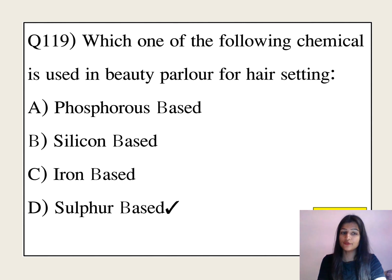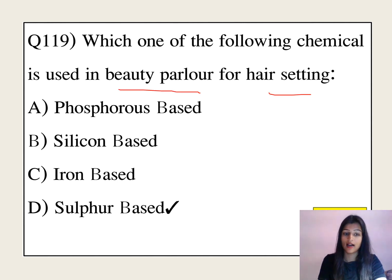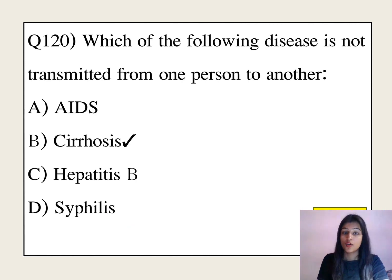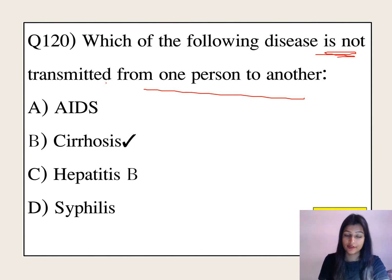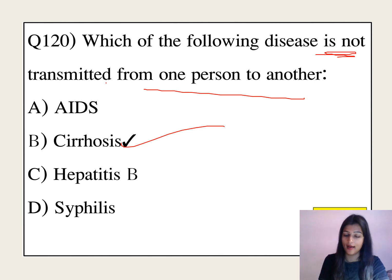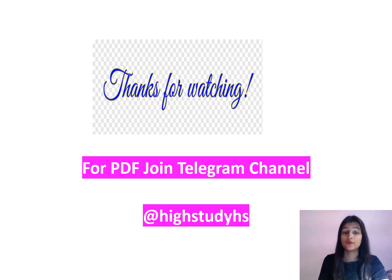Which chemical is used in beauty products for hair setting? The answer is sulfur-based compounds. Which disease is not transmitted from one person to another? With this we complete today's session. You can find the PDF on the High Study channel, and you can ask questions in the comment section.